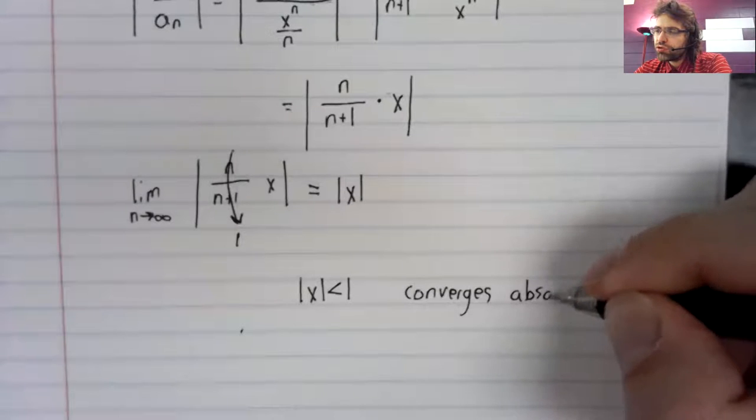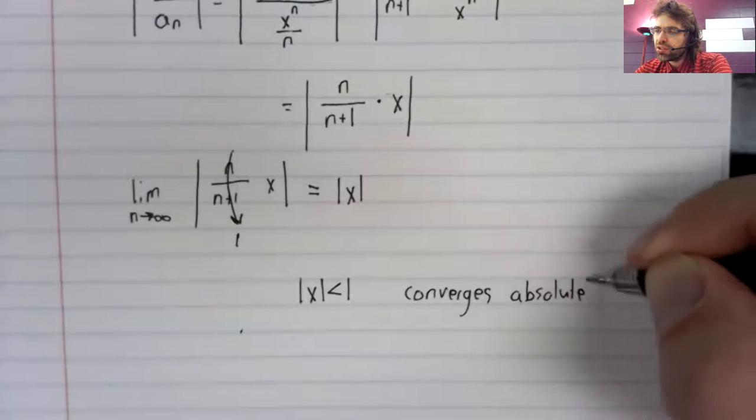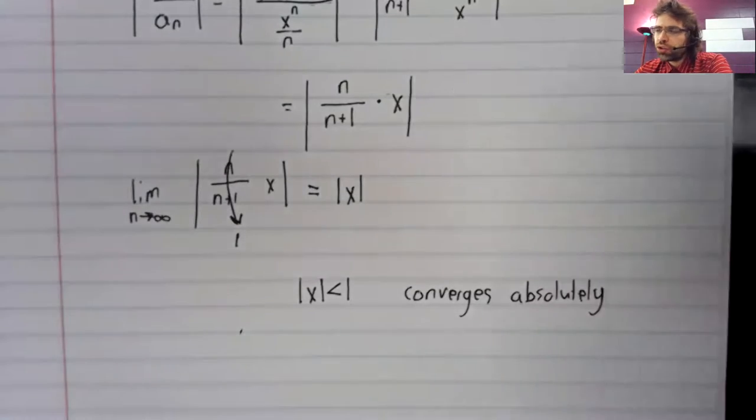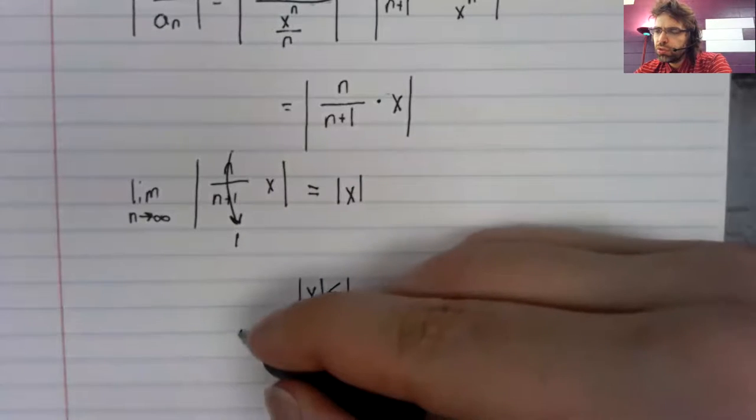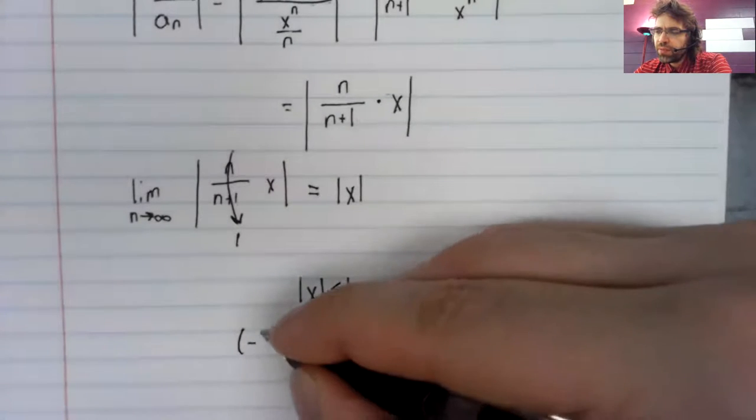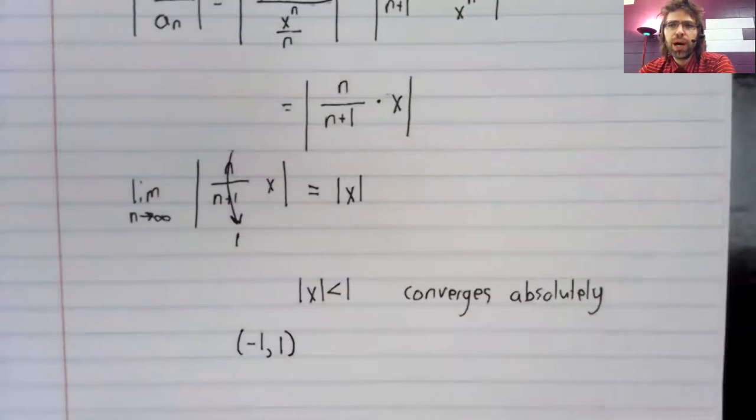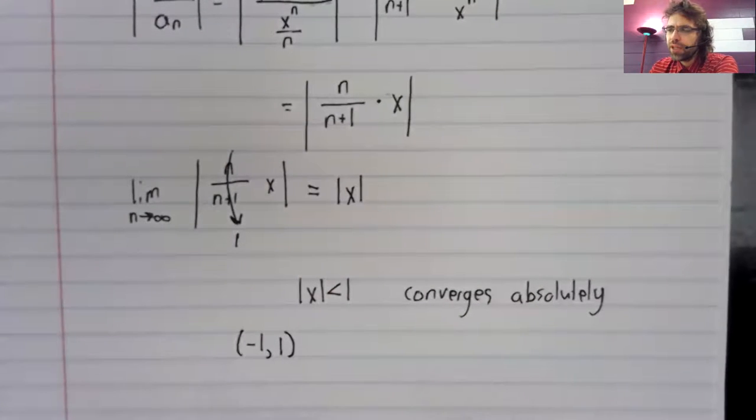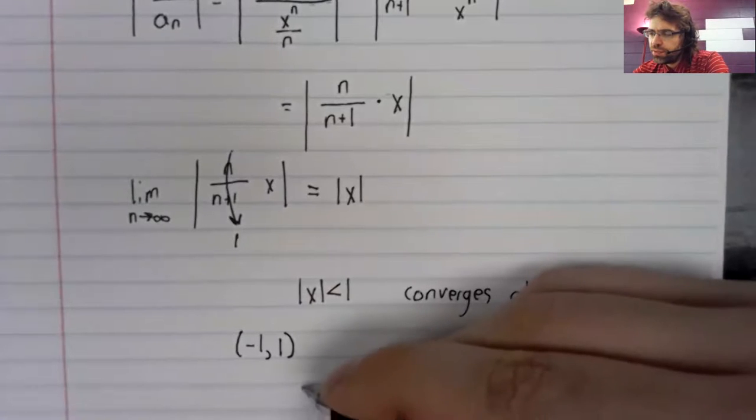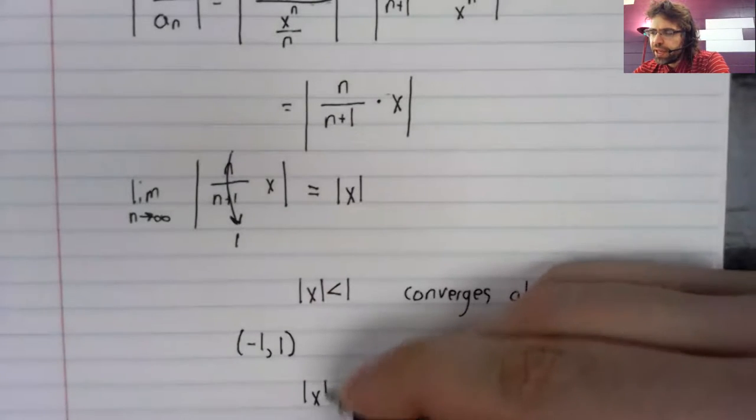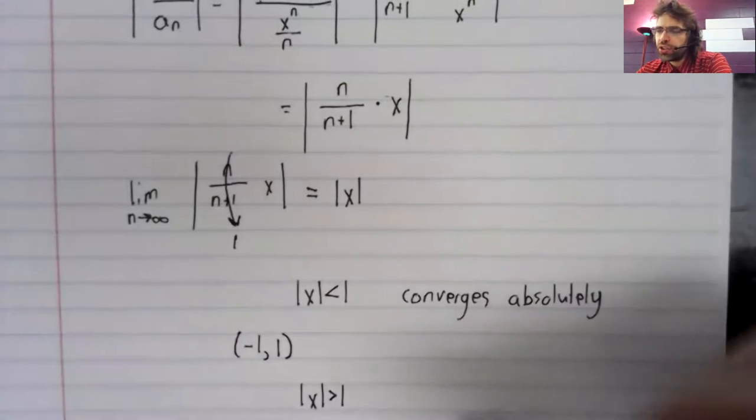And in fact, it converges absolutely from negative one to one. It diverges when x is greater than one.